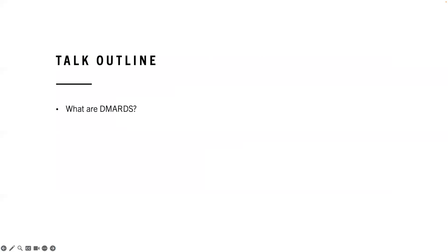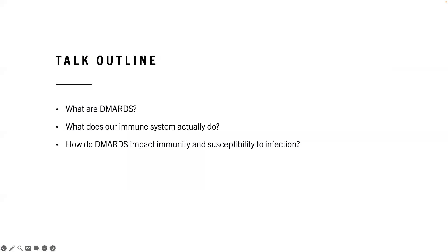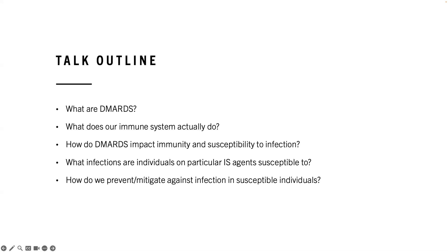What I'm going to cover is: what are DMARDs? What exactly does our immune system actually do? If we understand what our immune system does, we can look at what particular drugs do to the immune system in terms of their primary mechanism of action, and then understand what infection complications arise. Then how do DMARDs impact immunity and susceptibility to infection, what infections are individuals on particular immune suppressive agents susceptible to, and how do we prevent or mitigate against infection in these susceptible individuals?